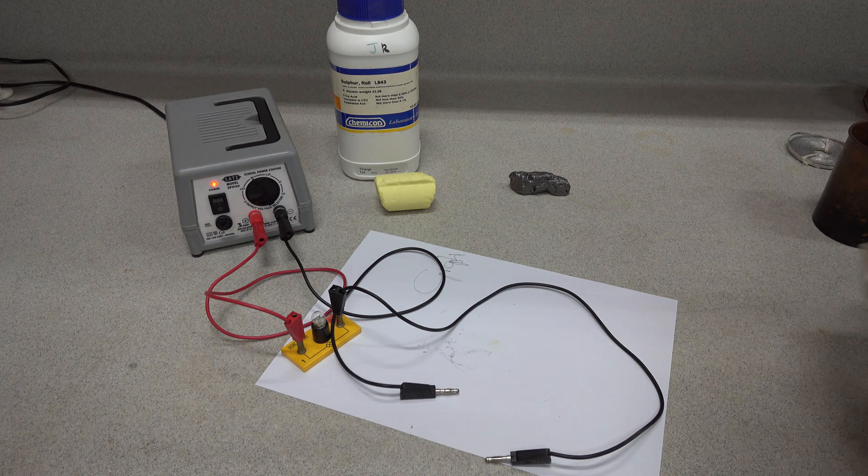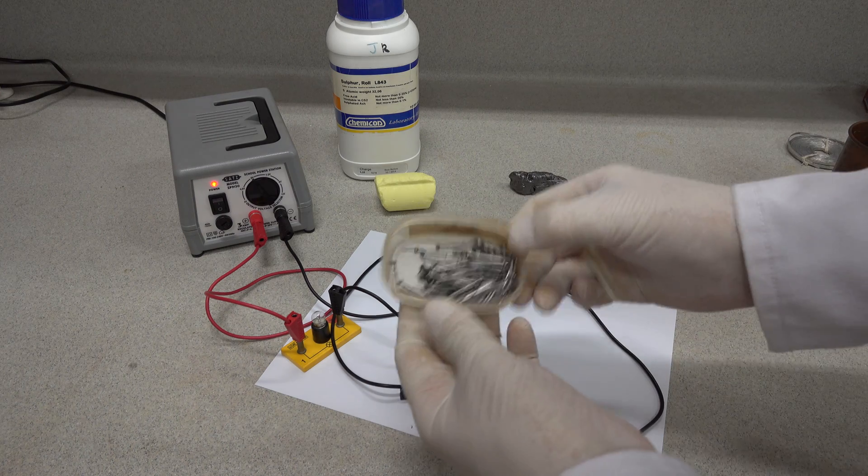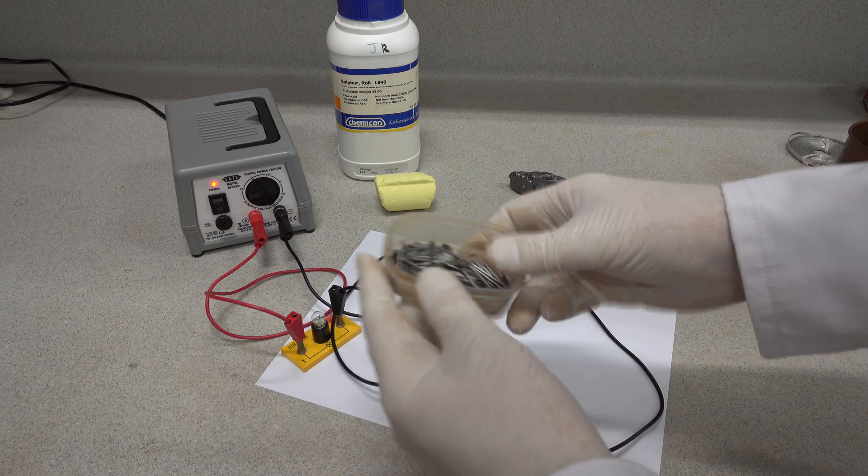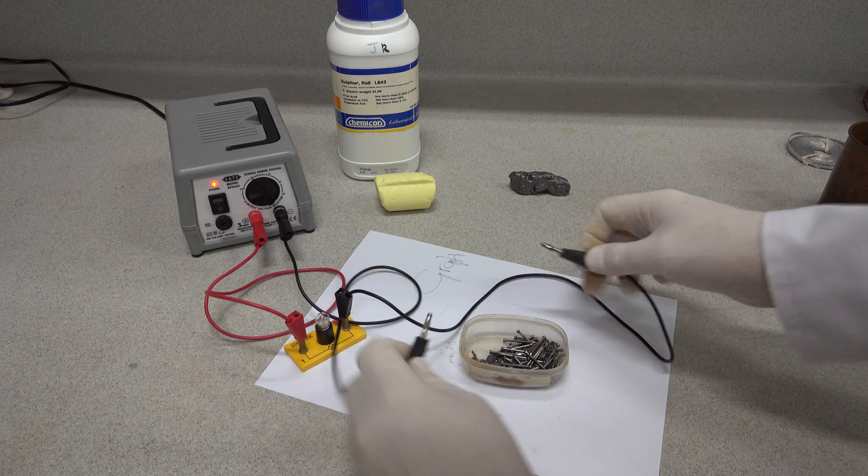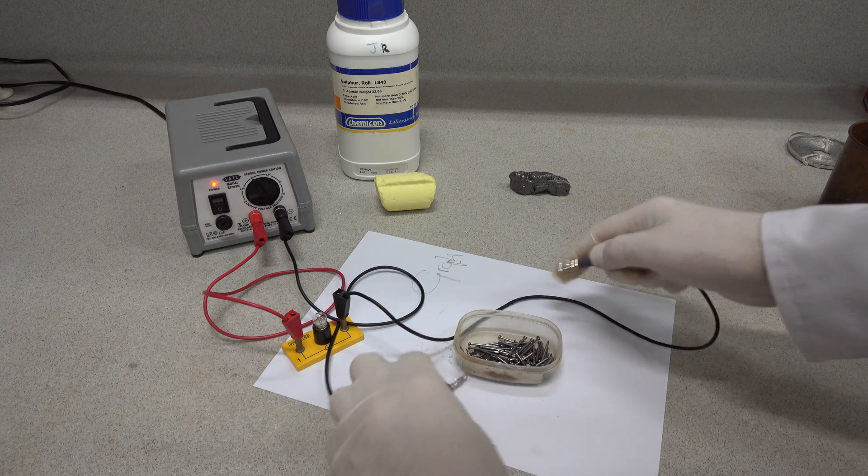Next, let's move on to some nails. These are iron, or mostly iron. And if we get them all to come together, we don't want any breaks in our circuit.